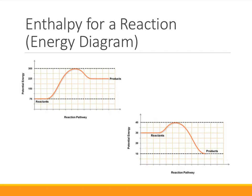Let's talk about what this means in terms of reactions. In our first diagram, we have what is known as an energy diagram, which shows us graphically where the energy between our reactants and products lies. The reactants are at an energy of 75 and the products are at an energy of 225. The enthalpy of the products is greater than the enthalpy content of the reactants, so ΔH — products minus reactants — is a positive 150. Since it is positive, this is an endothermic process.